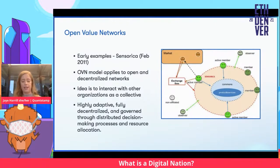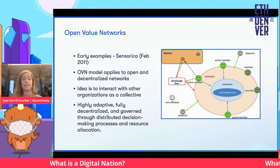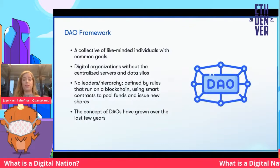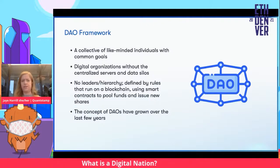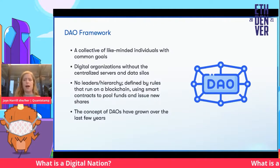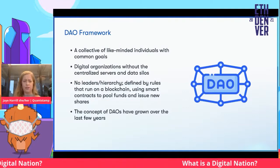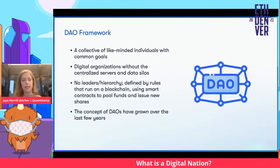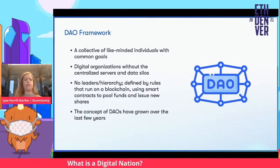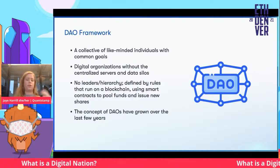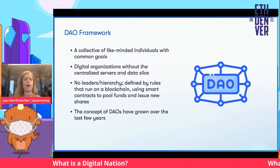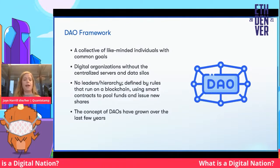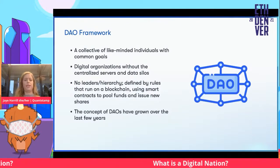Unfortunately, open value networks weren't able to gain traction, but they did set the stage for DAOs. We heard early terms like SPORM, digital collectives, removing silos of data and silos of thinking. The idea of a DAO is a collective of like-minded individuals with common goals — digital organizations without central servers, no leaders or hierarchies, rules defined by a smart contract that runs on a blockchain, and with a funding pool to issue new shares.